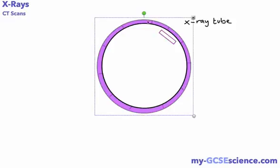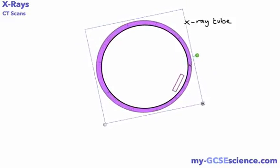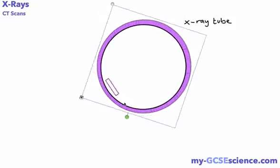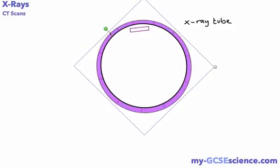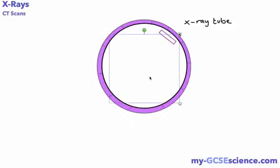This will emit x-rays in this direction, and we can actually rotate this whole tube like so, so it will emit the x-rays towards the person in all directions in a full 360-degree turn. If we have our person here in the middle, you can imagine that if this x-ray tube goes all the way around, it will take an image from every direction.